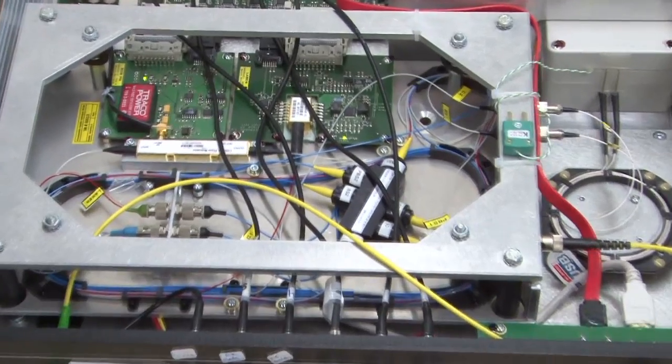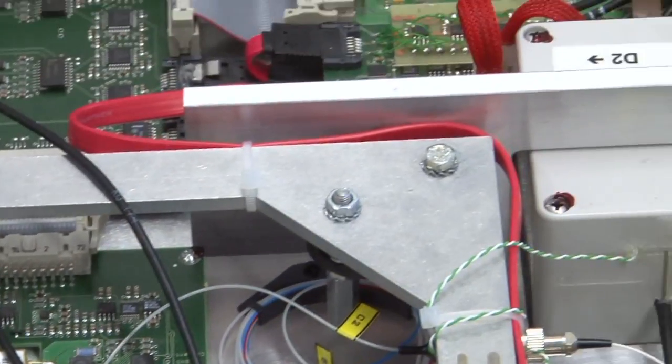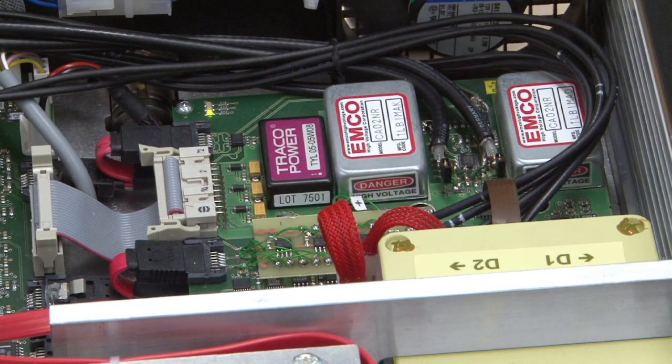Bob also has a phase modulator to perform the basis choice. The two detectors in Bob are avalanche photodiodes working in gated mode.